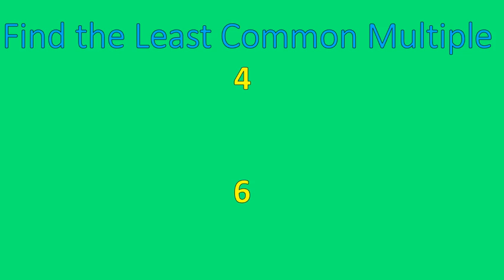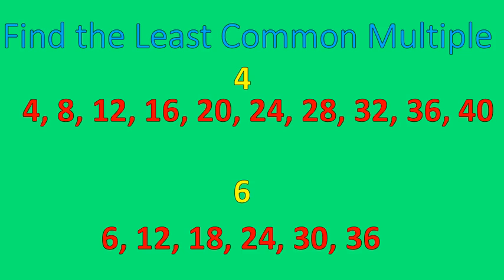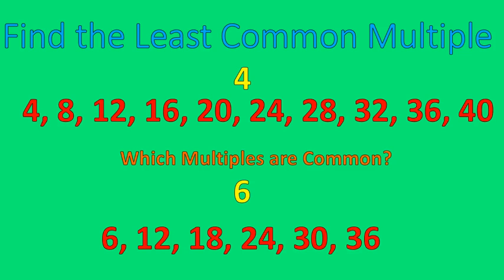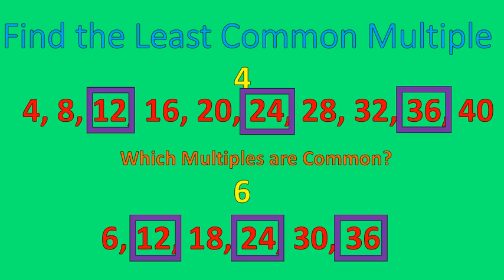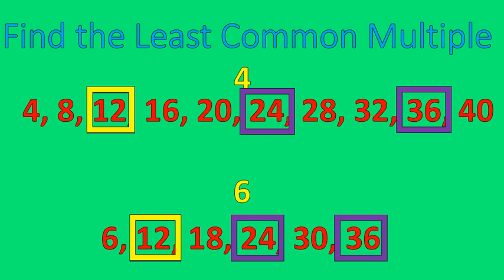Let's practice. Find the least common multiple of 4 and 6. You can pause the recording to try it on your own. The steps: first, list the multiples of these two numbers — it doesn't matter how many you list as long as you get a low one. Then look for multiples that are common: 12, 24, 36 are all common multiples of 4 and 6. Now identify which is the least common multiple — in this case it's 12. 12 is the lowest number that is a multiple of both 4 and 6.